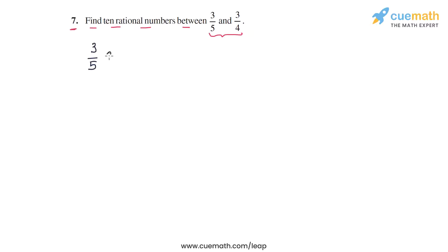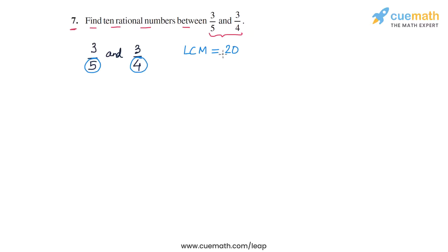The two numbers are 3/5 and 3/4, and their denominators are 5 and 4. We need to rewrite these two numbers as equivalent rational numbers with a sufficiently large common denominator. The LCM of 5 and 4 is 20, so let's pick a multiple of the LCM that is sufficiently large — let's take the denominator to be 20 times 10, or 200.